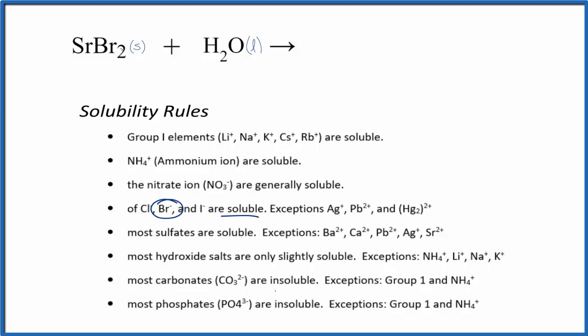It's going to break apart, dissociate into its ions. Strontium group 2 is 2+, and then the bromide ion, that's 1-, we have 2 of those. So we'll write Sr2+, plus 2 bromide ions.